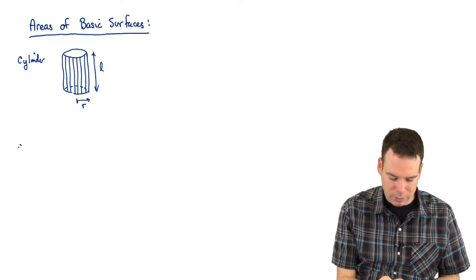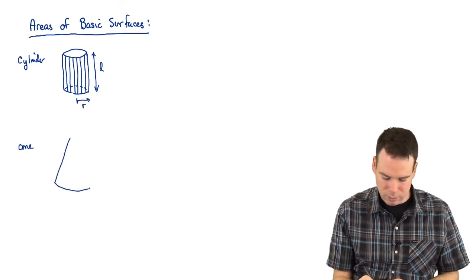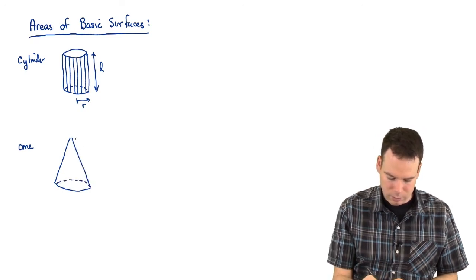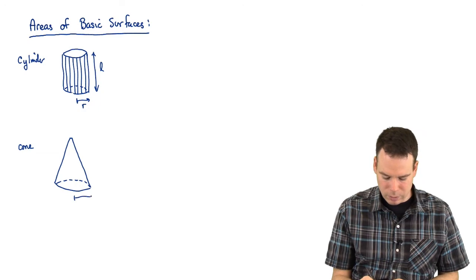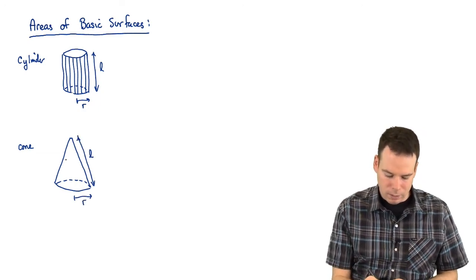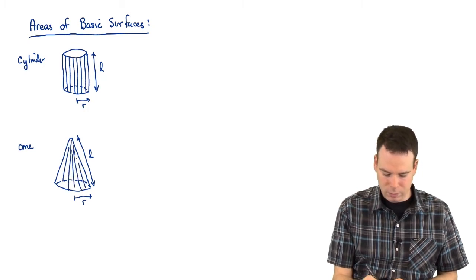The next basic shape we want to consider is a cone. So it looks like this. And again we'll say base radius R and side length L. And we're interested in the surface area of the sides here.